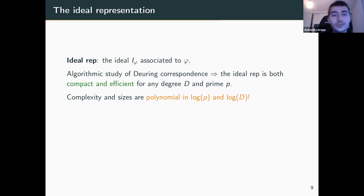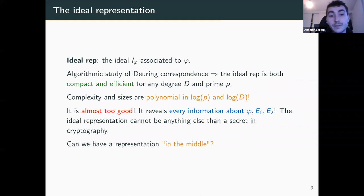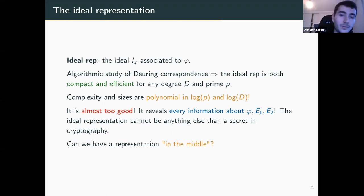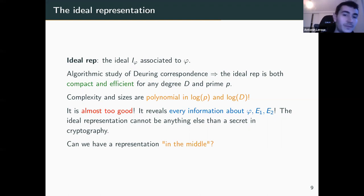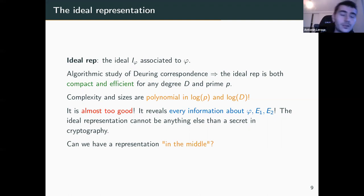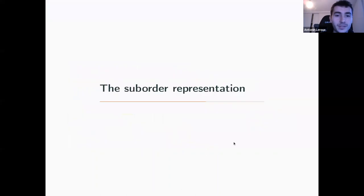However, the ideal representation is almost too good — it reveals every piece of information about the isogeny and the two curves E1 and E2. So we can use it as a secret, but we cannot hope to reveal this ideal representation and hide something from an adversary. For cryptography, we would like something that stands in the middle, and this is the goal of the suborder representation.